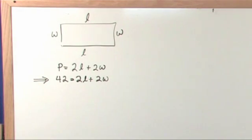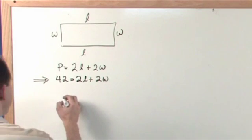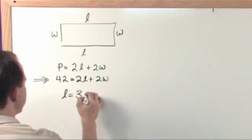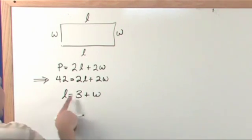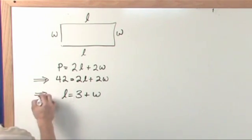The next thing it says is the length is three inches longer than the width. L is 3 plus W. The length is three inches longer than the width, so that's another important equation.